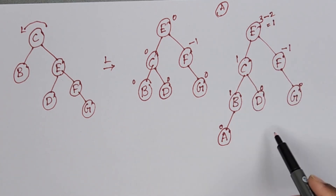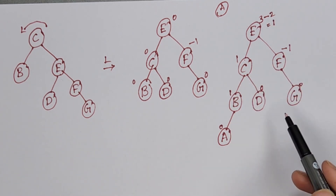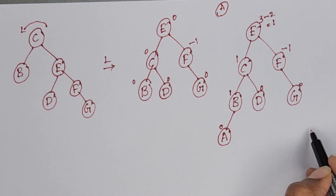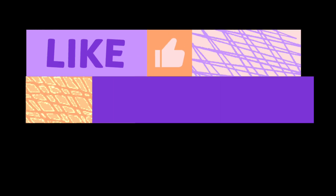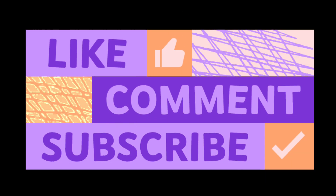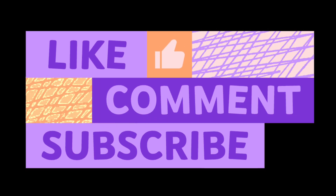Now every node is balanced. We add the last element A. A is less than E, left side. A is less than C, A is less than B. Left of B we have to add A. We write balance factors: 0, 1 minus 0 it is 1, 0, 0. Leaf nodes balance factor is 0. For C, left subtree height 2 minus 1 is 1. For F, there is no left subtree, 0 minus 1 it is minus 1. For E, left subtree height in longest path 3 minus right subtree height 2, 3 minus 2 it is 1. Now every node is balanced — no need to perform any rotation. This is our final AVL tree.